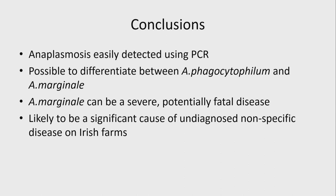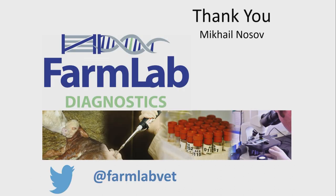To conclude: anaplasmosis appears to be easily detected using real-time PCR, and it is possible to differentiate between A. phagocytophilum and A. marginale, which has significance for expected disease severity and treatment. A. marginale, as we have seen in our veterinary practice, can be a quite severe and potentially fatal disease. I believe it is likely significantly underdiagnosed in Irish farms and is possibly a significant cause of undiagnosed non-specific disease where we see high fevers and milk drops. Thank you very much for your attention.